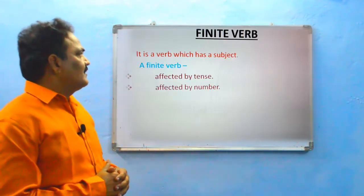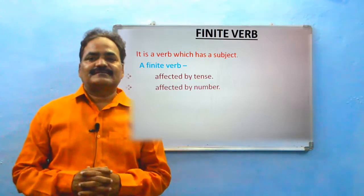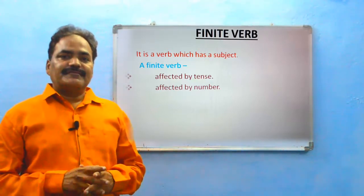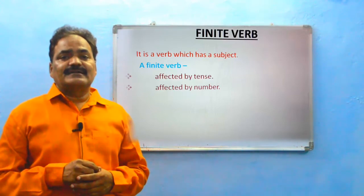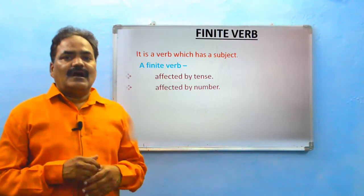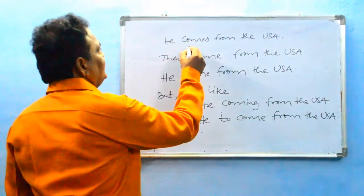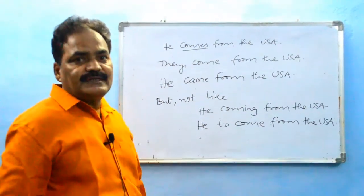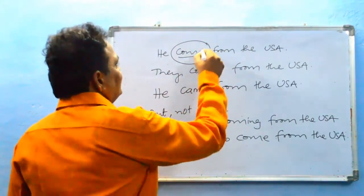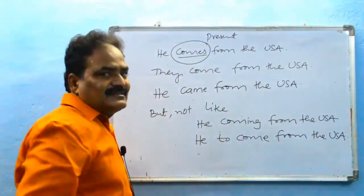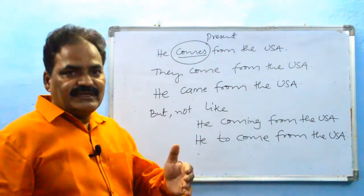So we can understand what a finite verb is. A finite verb is a verb that has a subject, is affected by tense, and also affected by number. We see this in the examples. 'He comes from the USA' — the principal verb 'comes' is in present form, always a finite verb, giving complete independent meaning. As the subject is singular, the verb is singular — 'comes' — affected by number.